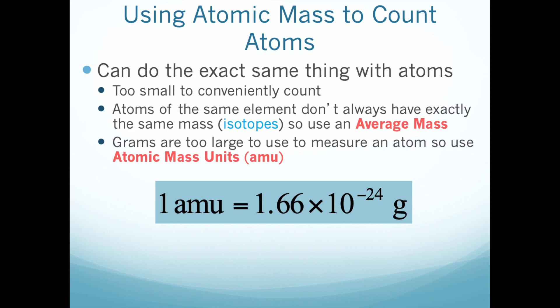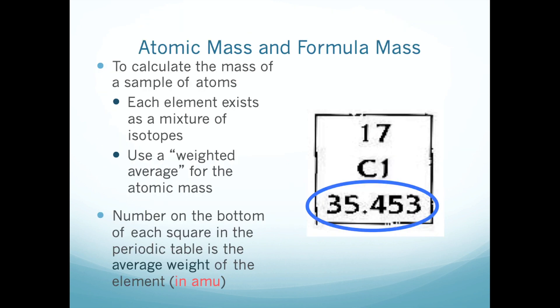Instead of dealing with grams when talking about individual atoms, we work on the scale of atomic mass units. I'll show you a more convenient way to convert between amounts of a chemical and its mass in grams a little bit later. For now, we'll stick with atomic mass units and use this conversion with grams. Those decimals next to each element in your periodic table give you the average mass of that atom, taking into account all the isotopes of that element.